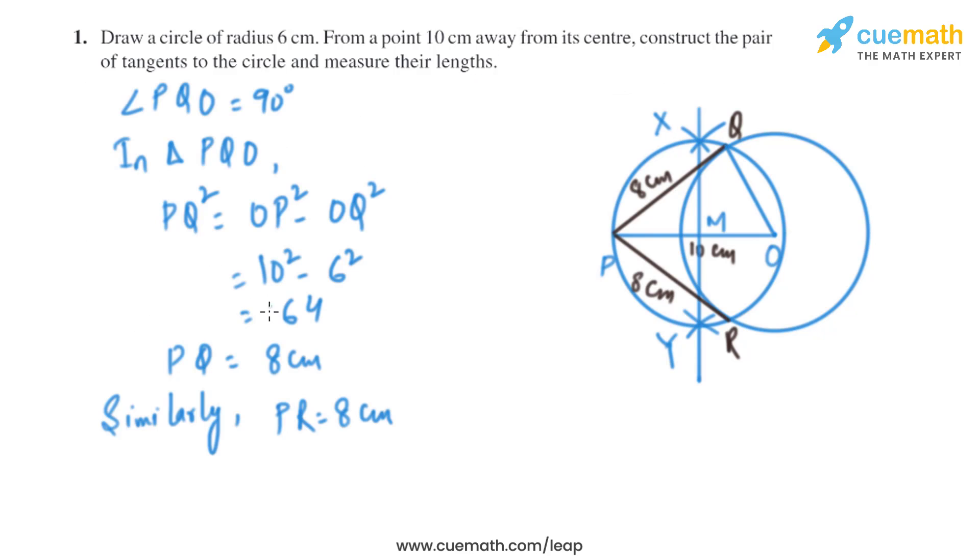Now let's do the justification of the construction. Angle PQO equals 90 degrees, so first of all we need to join O and Q. Now if we take triangle PQO and if we use Pythagoras theorem, we'll get PQ squared equals OP squared minus OQ squared. From here we'll get the value of PQ that equals 8 centimeter. Similarly we can find the value of PR that equals 8 centimeter.